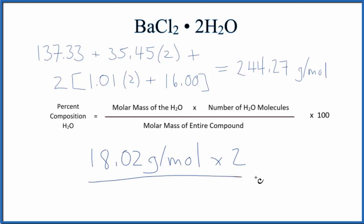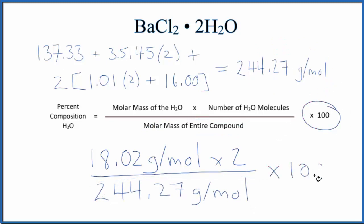And then we can divide it by the molar mass of the entire compound, which we just had found. We then multiply by 100 to get a percent. And you'll notice that grams per mole we have in the top and the bottom—that cancels out.